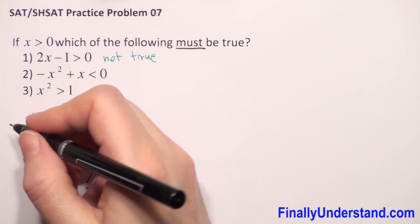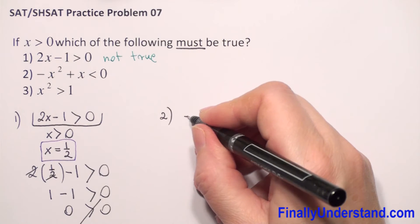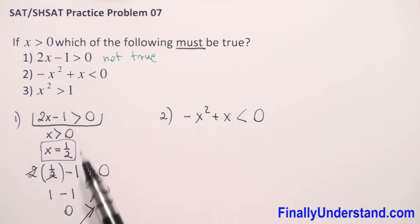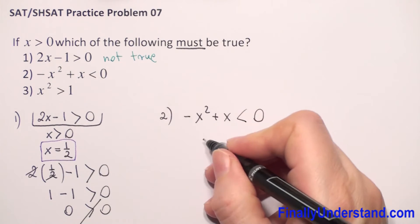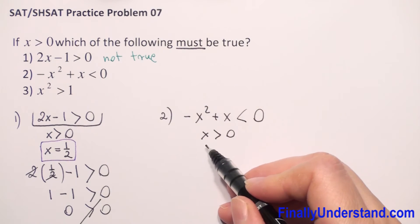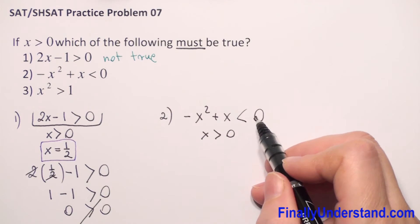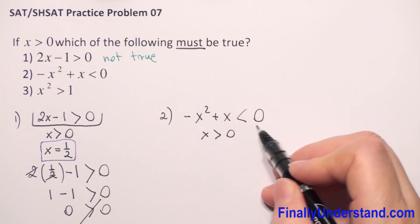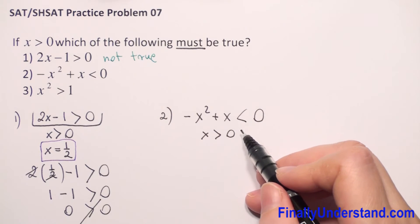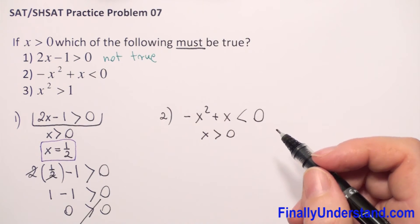Let's do the next one. The second inequality is: negative x squared plus x is less than 0. Again, because x must be greater than 0, we have to choose one number greater than 0. If that number does not give us a true inequality, it means this inequality is not true for all x greater than 0.